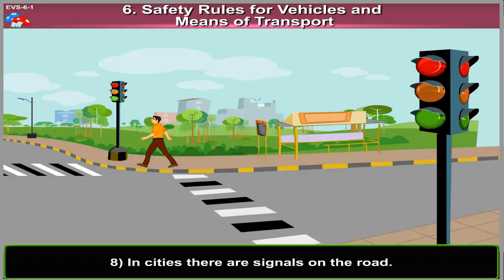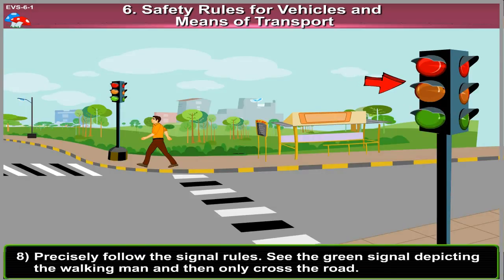8. In cities, there are signals on the road. Precisely follow the signal rule.